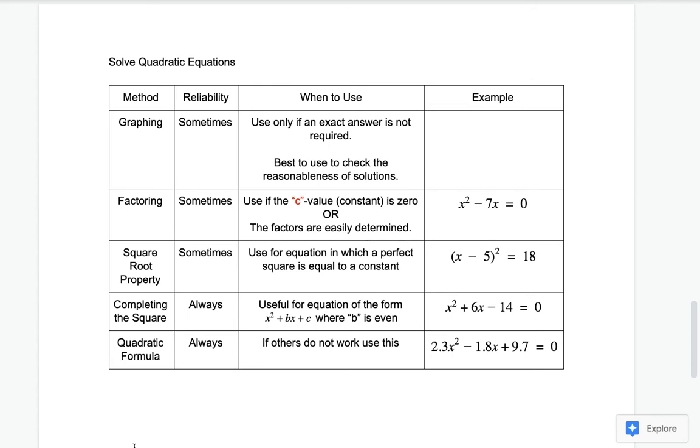So on the left side there, we have x minus 5 squared. That is a perfect square. We could start solving that by taking the square root of both sides, and that would help us find our solution.